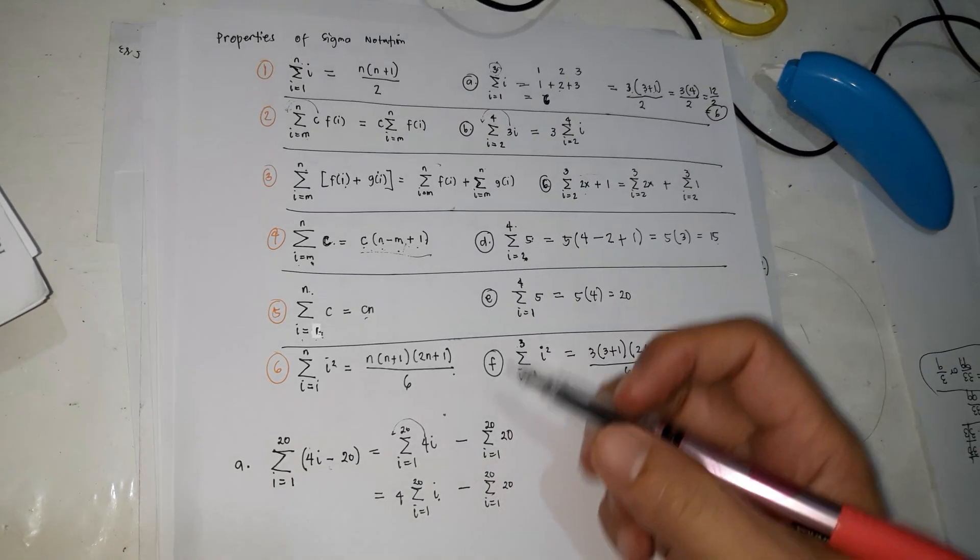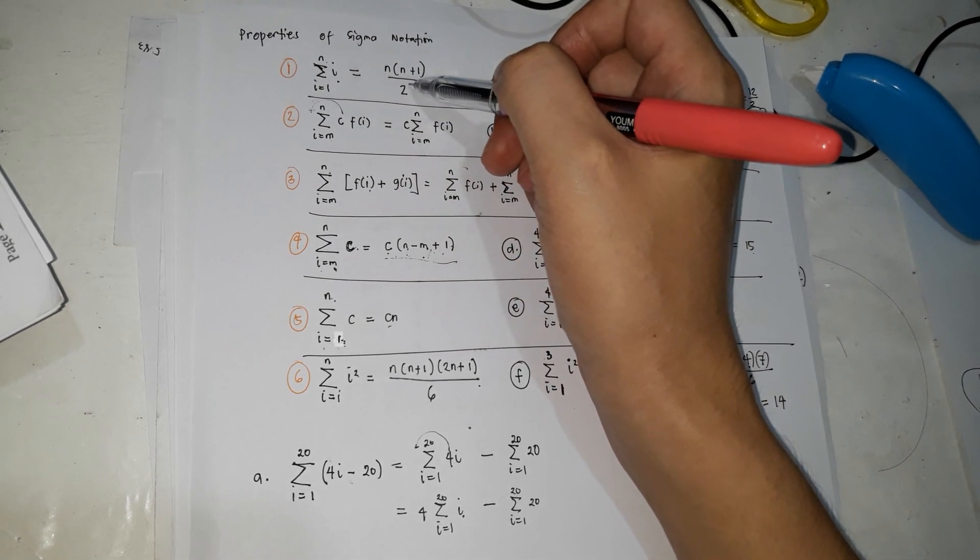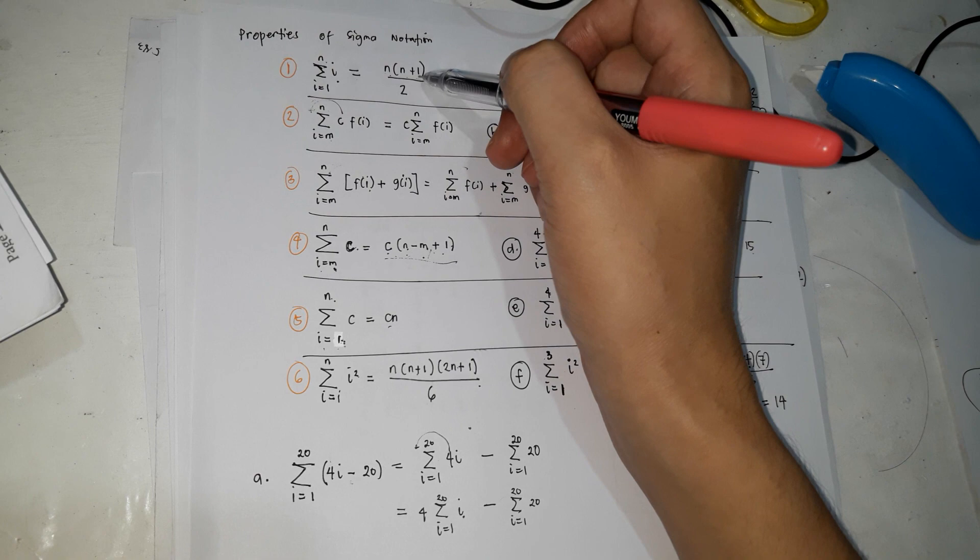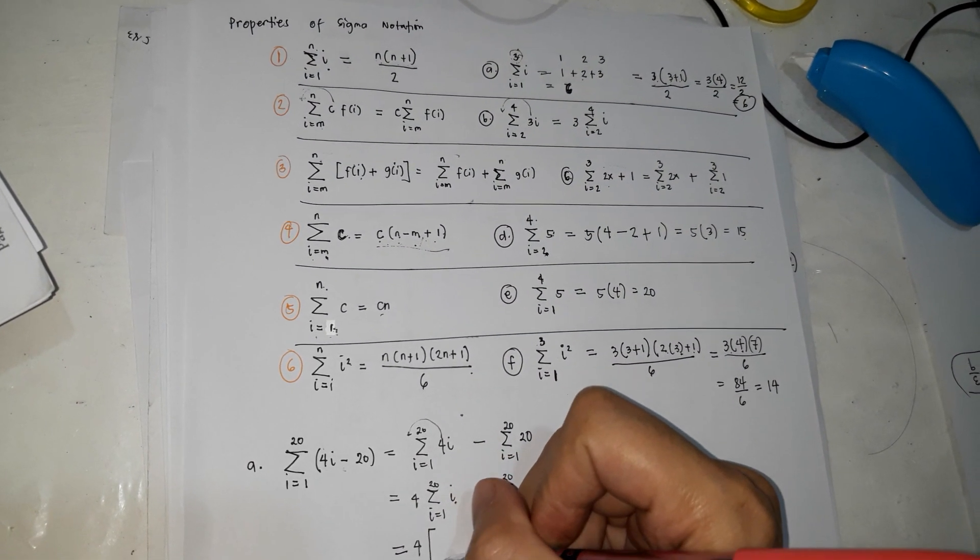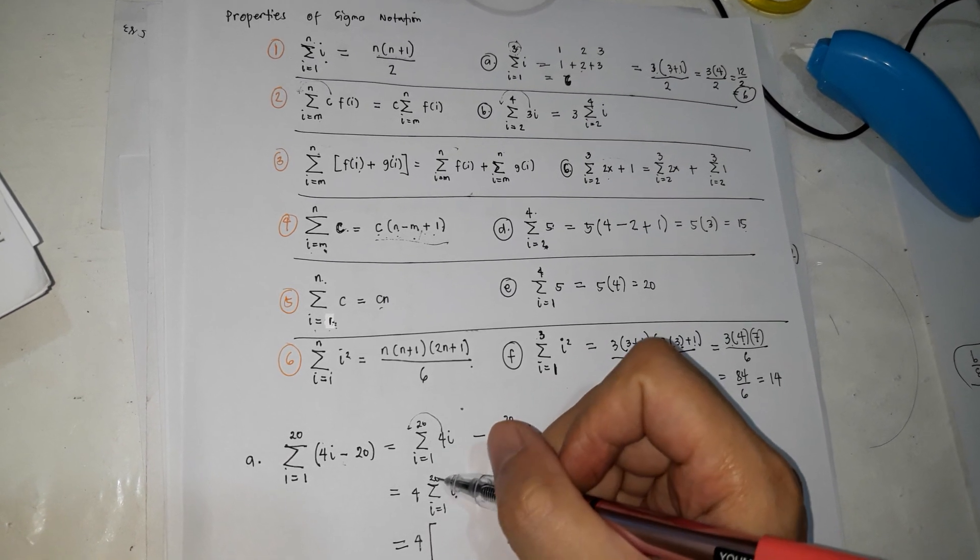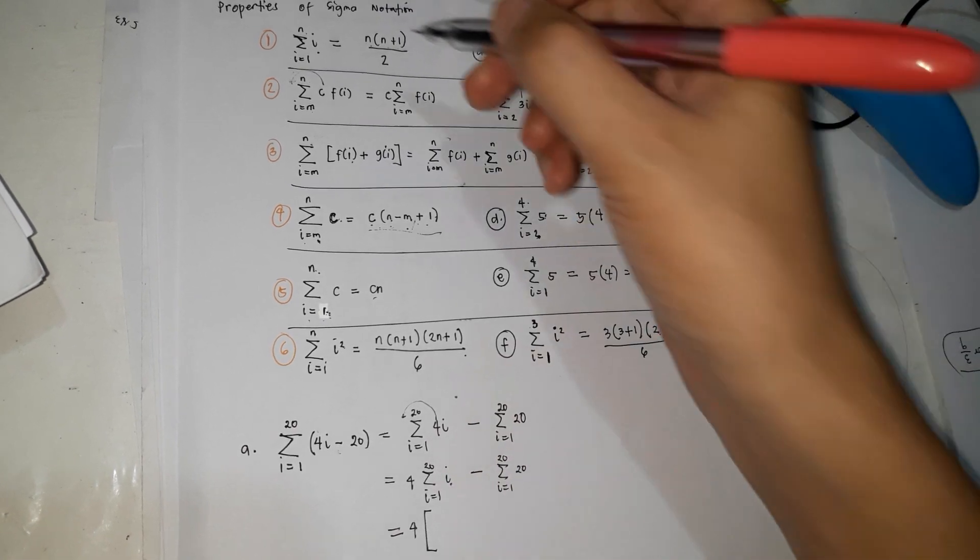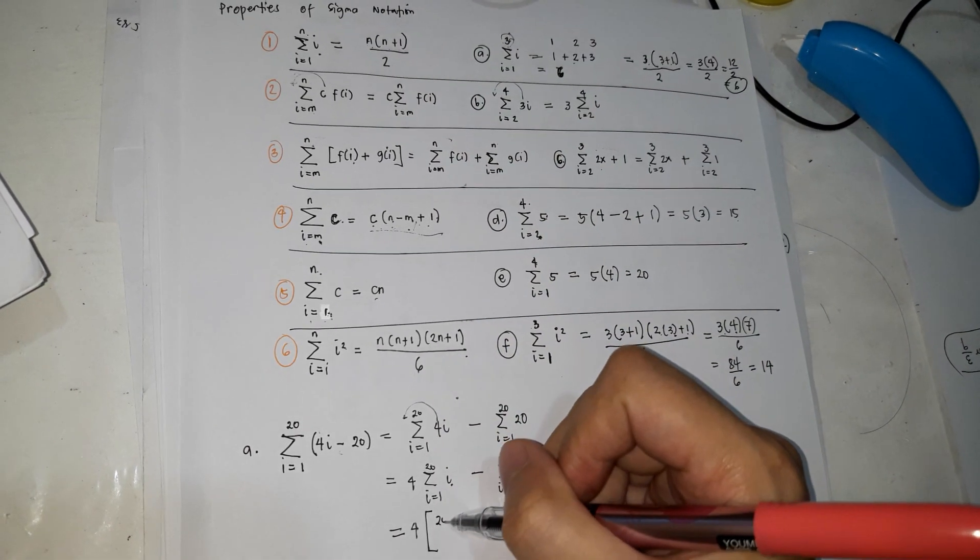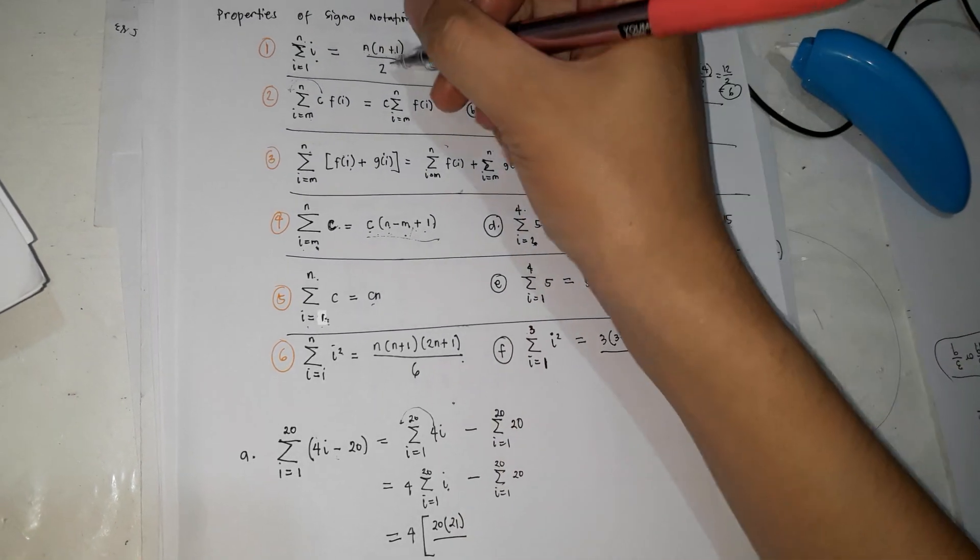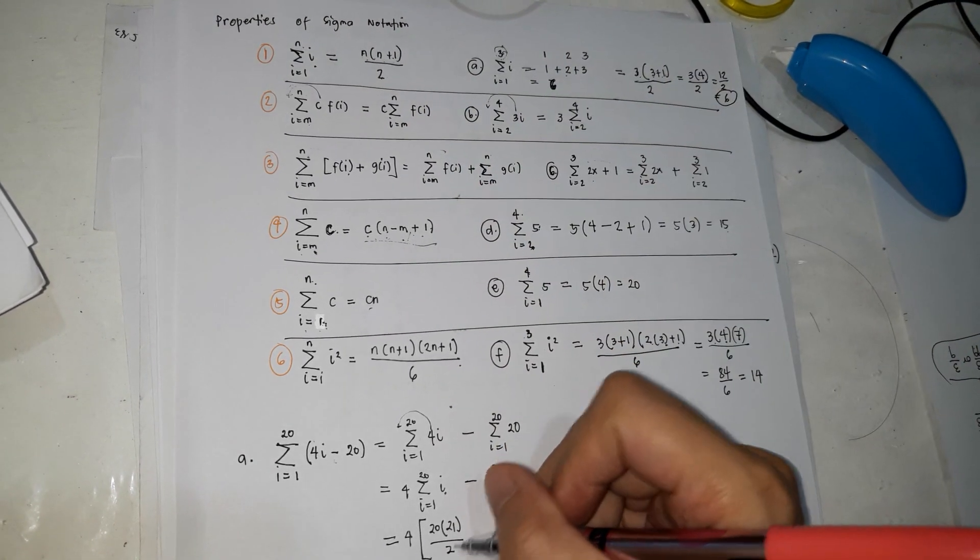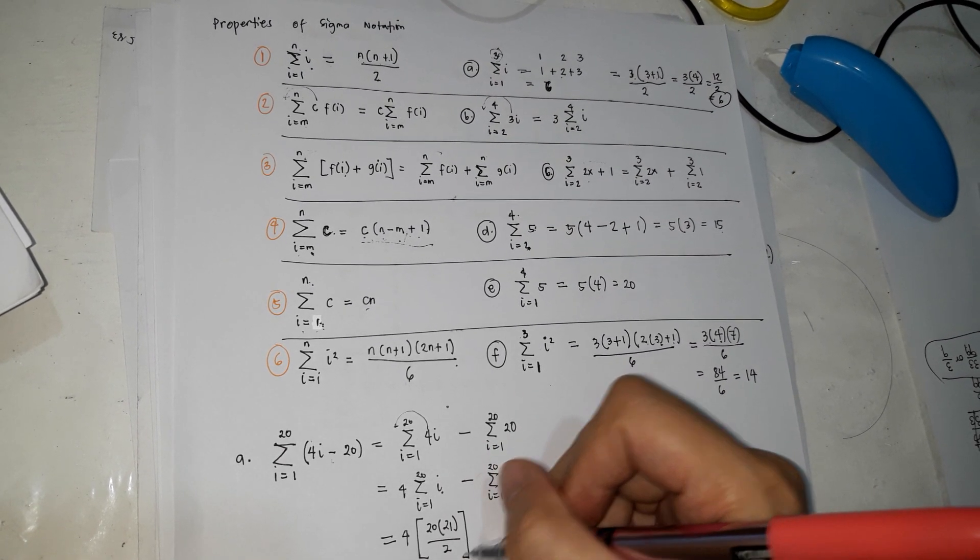So pwede mo ito siyang gamitin. It is equal to n, n plus 1 over 2. So ito siya, equal siya sa, kopiyan mo ng 4, equal to siya, what is n in here? The n is 20. Ang n dito is 20. So n, 20, 20 plus 1, 21, over 2, this is the formula, close, minus.